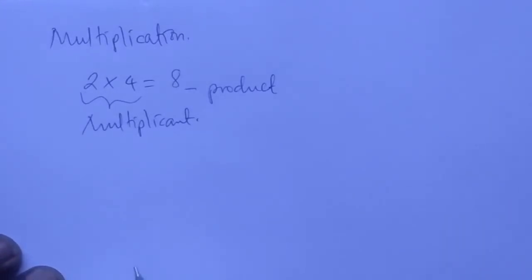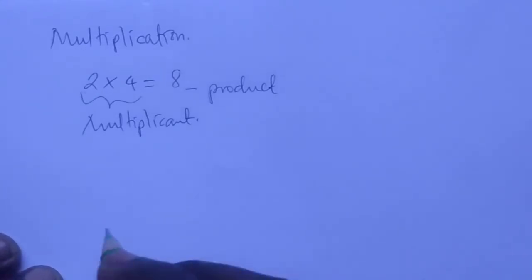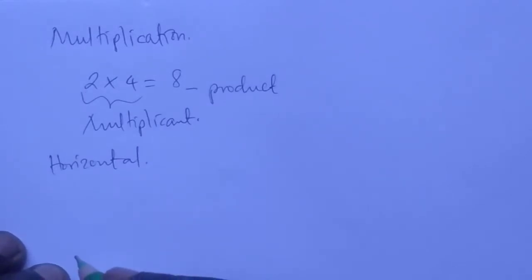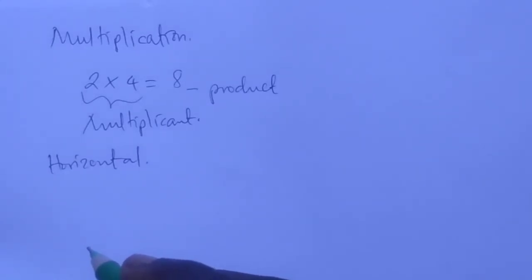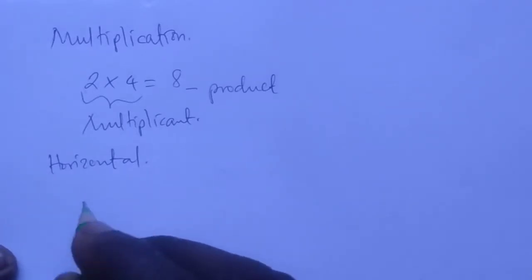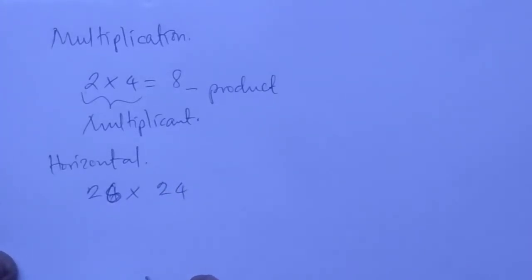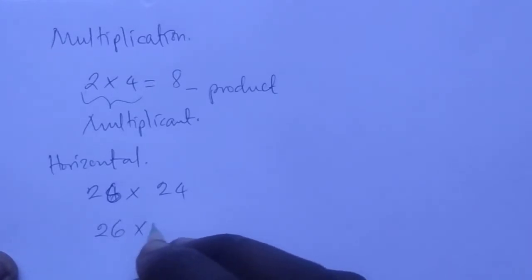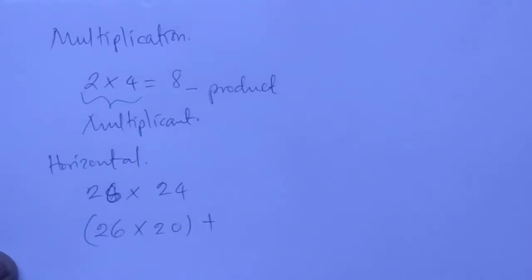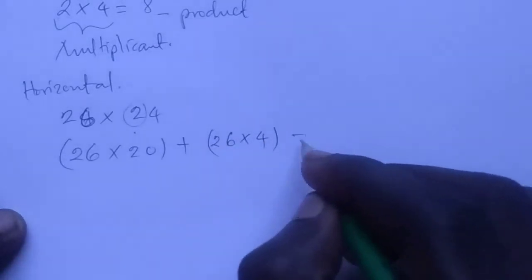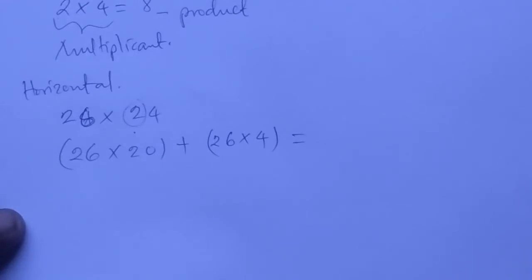In multiplication, we have two types: horizontal and vertical. In the horizontal method of multiplication, for example, 26 times 28 is the same as saying 26 times 20 plus 26 times 8. We multiply the number by each place value component. That is the horizontal method of multiplication.